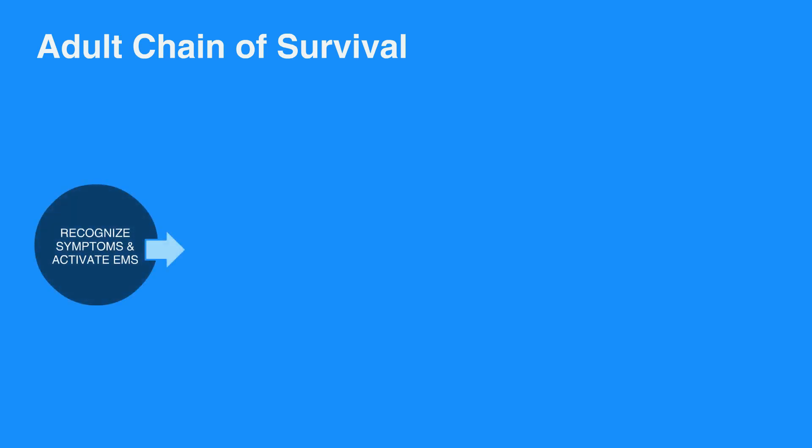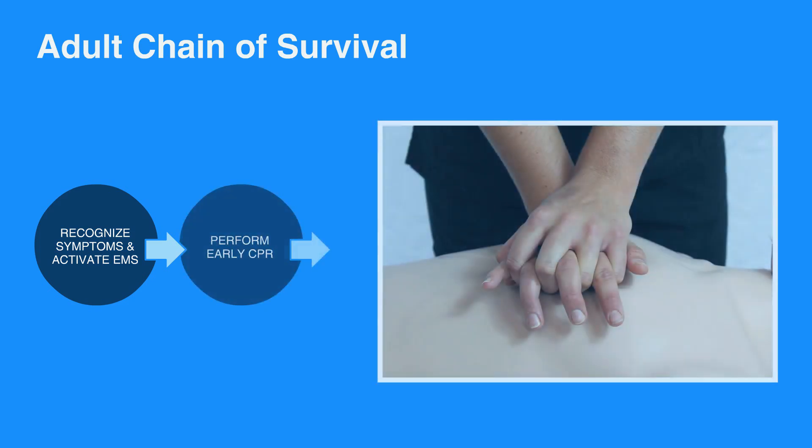The first step in the adult chain of survival is to recognize symptoms and activate EMS by calling 911. Next, perform CPR by providing high-quality chest compressions to circulate oxygen.